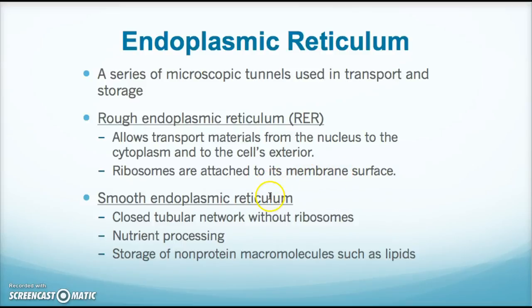You will also find smooth endoplasmic reticulum within the cell. It's a closed tubular network and does not have ribosomes — hence the term smooth instead of rough. This is where you would see nutrient processing and often storage of non-protein macromolecules such as lipids.